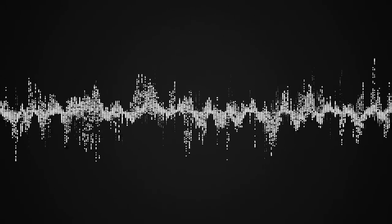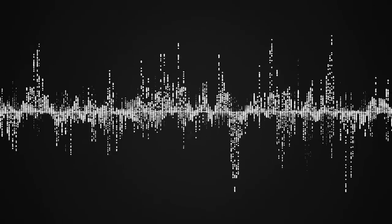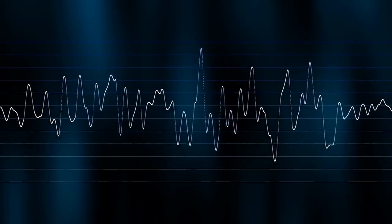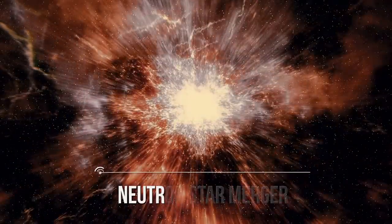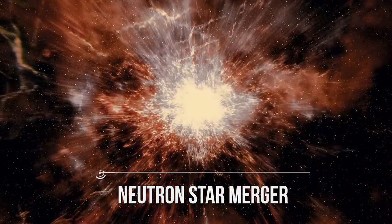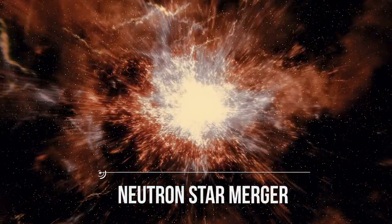Short gamma ray bursts have a duration of less than 2 seconds, and they can even last a few milliseconds only. Although scientists are not exactly sure about their origin, they think that short gamma ray bursts are produced during events known as neutron star mergers, in which two neutron stars collide producing a more massive one, or a black hole.